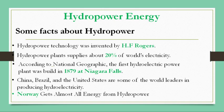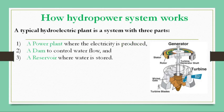Some of the world leaders in hydropower energy are China, Brazil, and the United States. Norway is a country which gets almost all of its energy from hydropower — its hydropower installed capacity is near about 99% of the total electricity generated in the country.